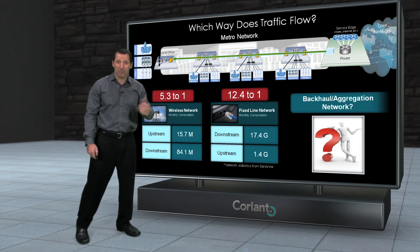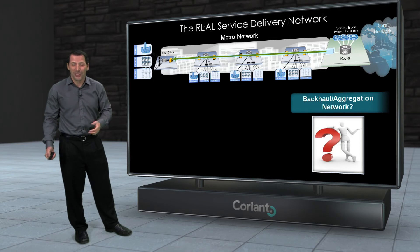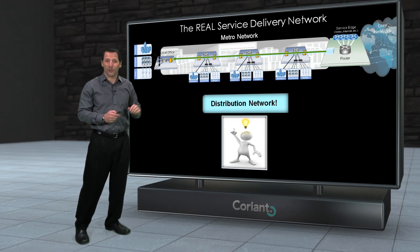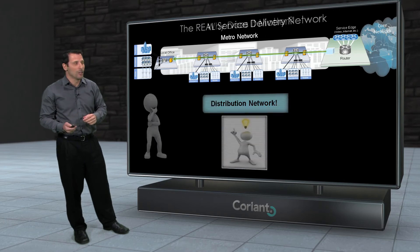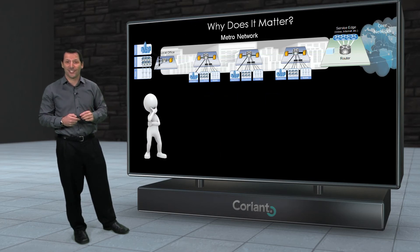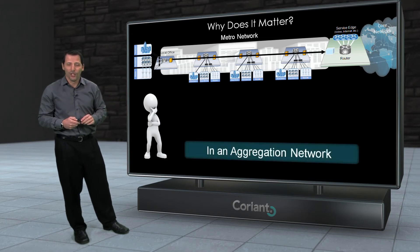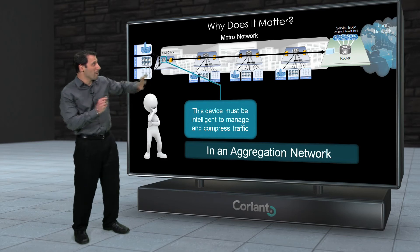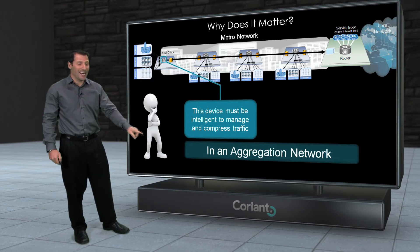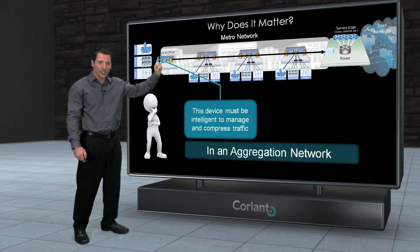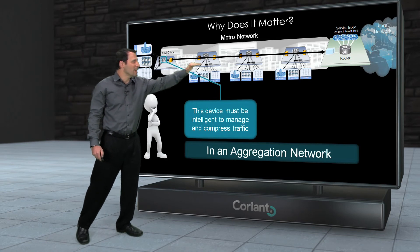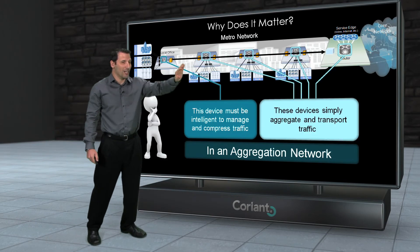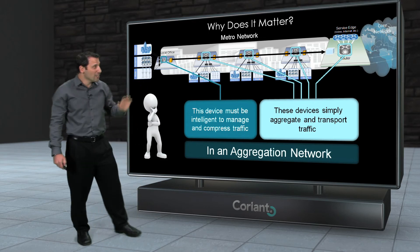That gets us back to the names of these networks — backhaul and aggregation — that's probably not the best name. Maybe a better name would be 'distribution network.' Now, these are clearly more distribution than aggregation, and it does matter what we call them because it can lead us to make bad decisions. If we think of these as aggregation networks, we'll put a lot of emphasis and spend a lot of money at the edge of the network — buying very intelligent devices, deploying them at the edge where I have the most locations — because in an aggregation network I want to take traffic at the edge and squeeze it as much as I can, filtering out as much as possible so I'm sending as little information upstream as possible. Then all the upstream devices just steer traffic and don't need to be particularly intelligent.